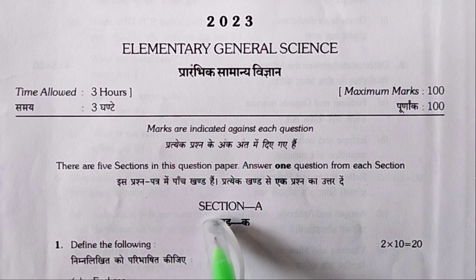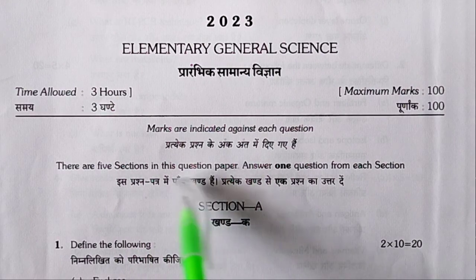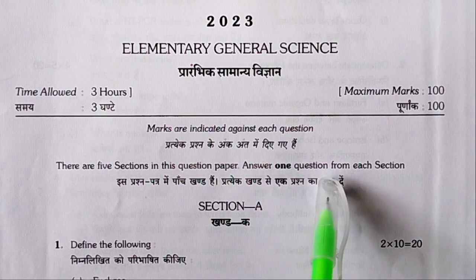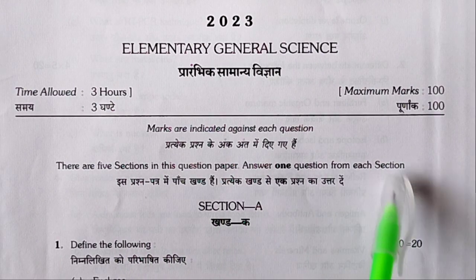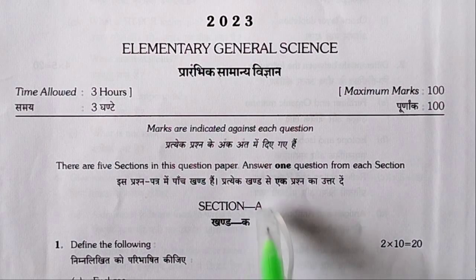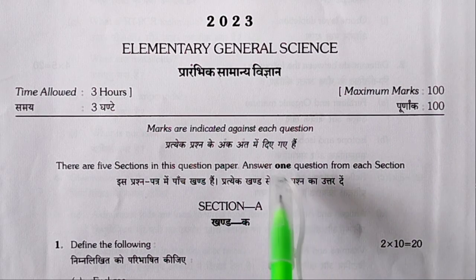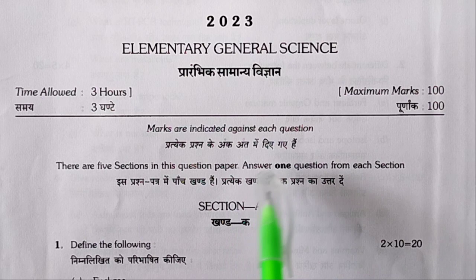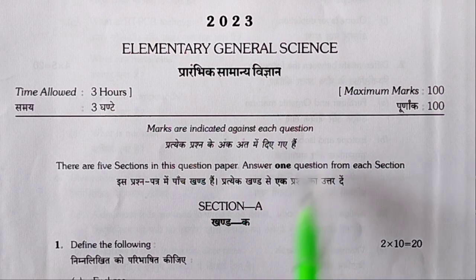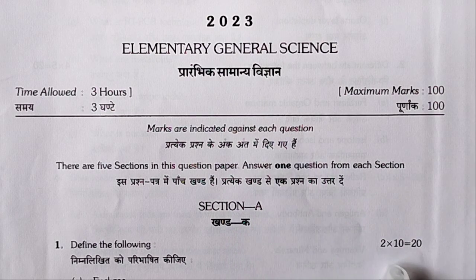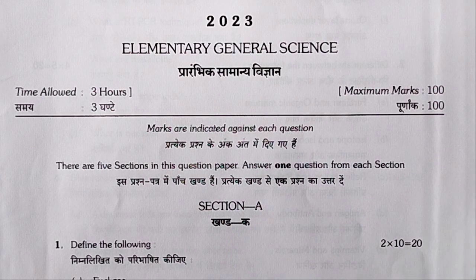There are 5 sections. This question paper requires answering one question from each section. In one section, you have to answer 2 questions, and in total you have to answer 5 questions. If 1 question is 20 marks, then 5 questions equals 100 marks.